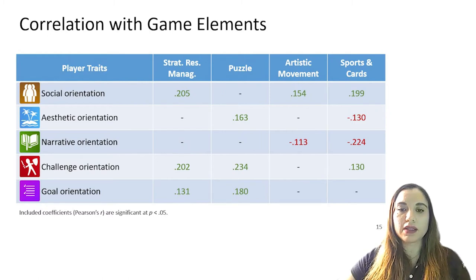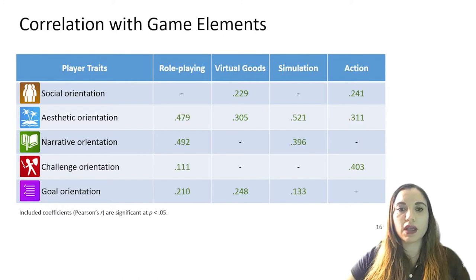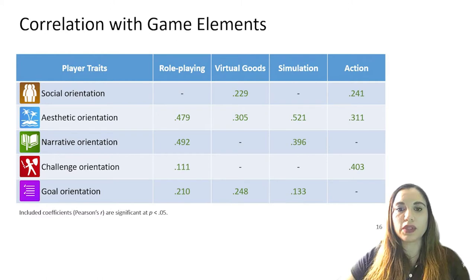In terms of correlations with game elements and playing styles, significant correlations between aesthetic and narrative orientation with role-playing and simulation games are expected because these games normally focus on narrative and aesthetic experiences. Aesthetic is also correlated with virtual goods and action. Narrative orientation is negatively correlated with sports and cards, which makes sense as these games usually have no story. The correlation between goal orientation with puzzle, role-playing, and virtual goods can be explained because these elements are based on setting goals for players. Correlations between social orientation with sports, cards, virtual goods, and action are explained because these games have some element of player interaction. Challenge orientation correlates with strategic resource management, puzzle, and action because these elements pose difficult challenges for players.